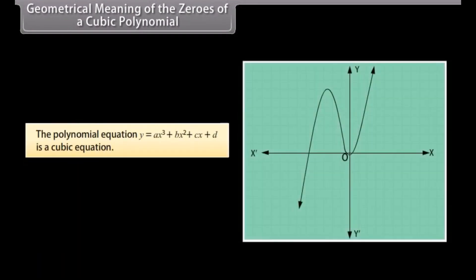Geometrical meaning of the zeros of a cubic polynomial. The polynomial equation y equals ax cubed plus bx squared plus cx plus d is a cubic equation. This is the shape of the graph for a cubic polynomial.